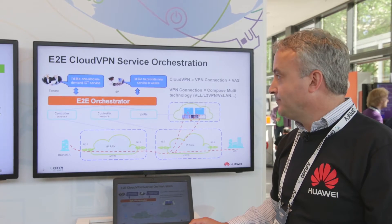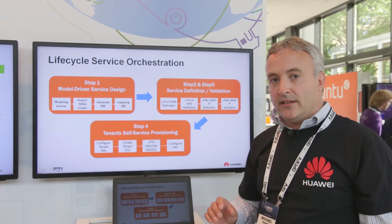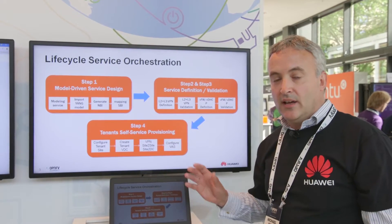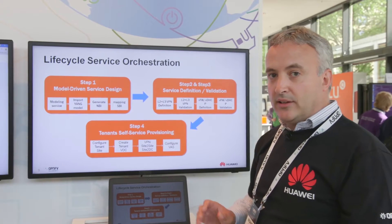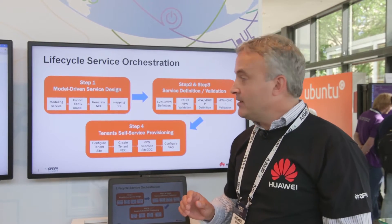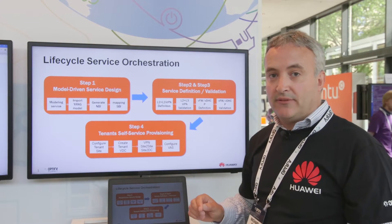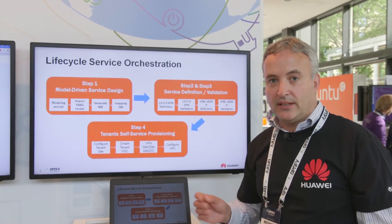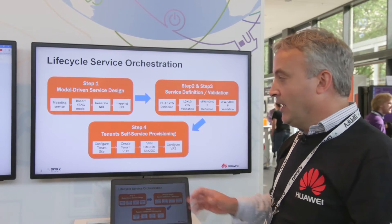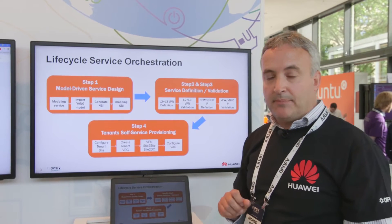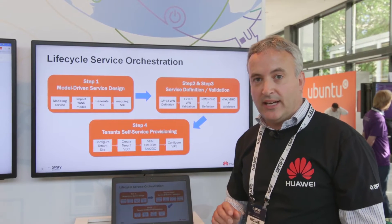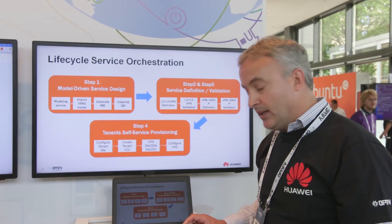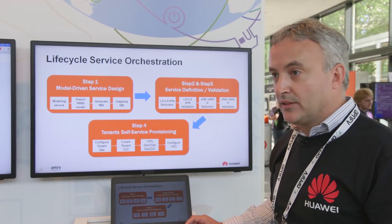Let's talk about lifecycle service orchestration. Lifecycle service orchestration is the process by which we can introduce a new service offering quickly into the orchestration environment, and then configure that service offering to a very fine-grained level based on the operator's specific characteristics and attributes. The final step is to be able to provision and activate that for a tenant within the operator network, including spinning up the value-added services for that tenant.